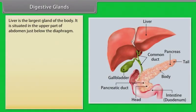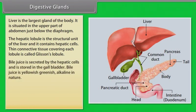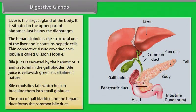The liver is the largest gland of the body, situated in the upper part of the abdomen just below the diaphragm. The hepatic lobule is the structural unit of the liver and contains hepatic cells; the thin connective tissue covering each lobule is called Glisson's capsule. Bile juice is secreted by hepatic cells and stored in the gallbladder; it is yellowish-green and alkaline in nature. Bile emulsifies fats, breaking them into small globules. The duct of the gallbladder and the hepatic duct together form the common bile duct.